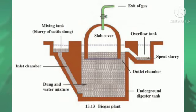Now let us see the biogas plant. In a biogas plant, animal dung, dry leaves, and wet garbage get decomposed by anaerobic microbes. This produces methane gas, also called biogas. Biogas is a very cheap fuel option which meets the demand for cooking gas and is also used for production of electricity. Biogas contains about 55% to 60% methane and the rest is carbon dioxide. In addition, a very good manure is also produced as a side product of the process.